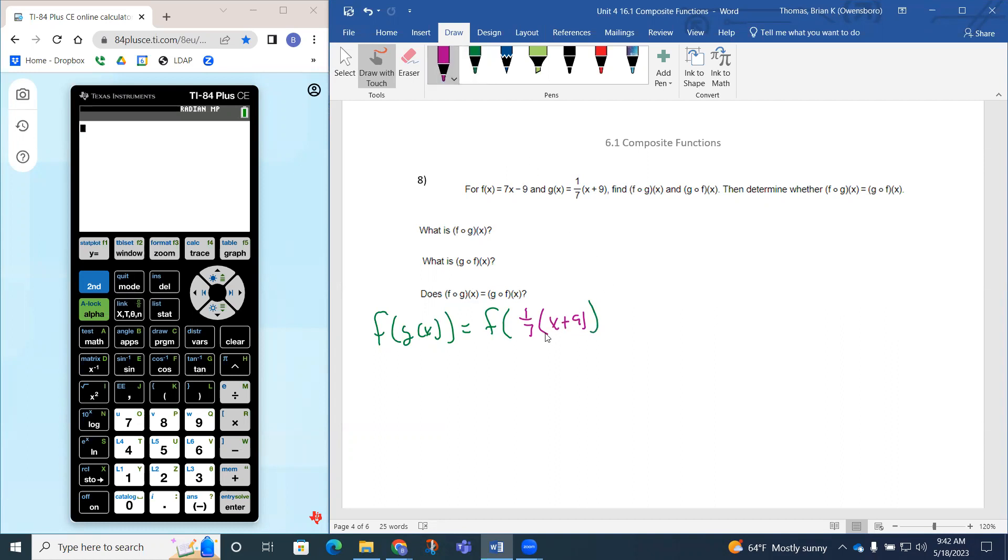So this is actually going to go into the f function. So the f function is 7 times, and what's going to happen is this whole thing goes in for x. That's a composite function concept.